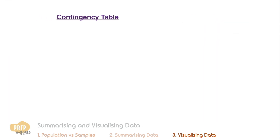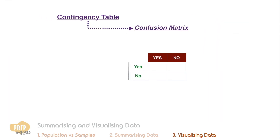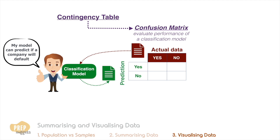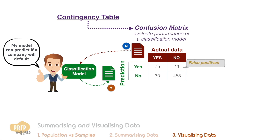One special kind of contingency table is a two-by-two array called a confusion matrix. Analysts use a confusion matrix to evaluate the performance of a classification model. Suppose an analyst develops a model to predict if a company will default on its debt. One way of testing the model is to feed it actual past data and record the corresponding predictions. If the actual data is a default and the prediction is also a default, we add one to the yes-yes cell. If the actual is no default but the model predicts a default, we add one to the no-yes cell. After tallying up, we get the confusion matrix, where one cell reflects the false positives and another reflects the false negatives from the model.